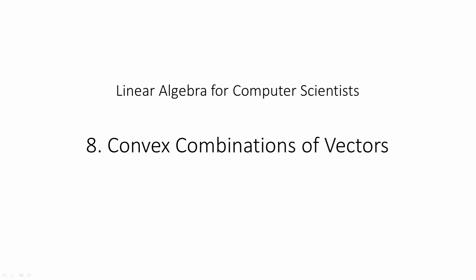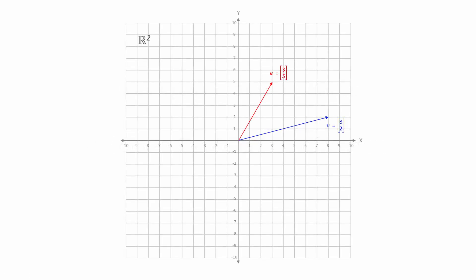A convex combination is a linear combination in which the sum of the coefficients is equal to 1. Before we calculate some convex combinations, let's think about what they mean.